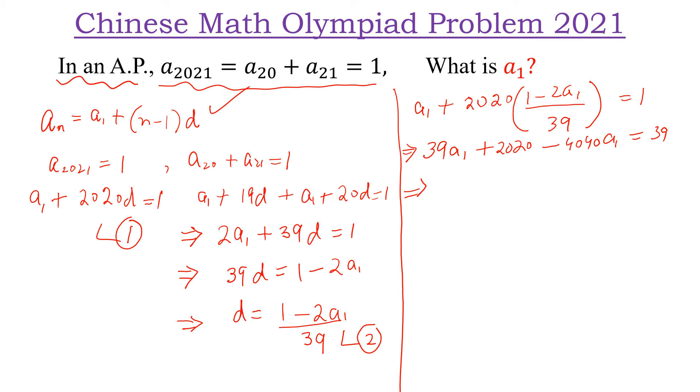Next, we can write 2020 minus 39 is equal to 4040A₁ minus 39A₁.